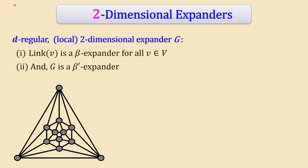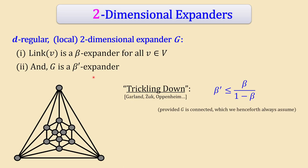A d-regular graph G is a local two-dimensional expander if it has two properties. Property one: for every vertex V, the link graph is a beta-expander. Property two: the whole graph G itself is also a good expander with some parameter beta'. There's a theorem called 'trickling down,' first proved by Jouk in the early 2000s, which says whenever property one holds with beta, you automatically get property two with beta' at most beta/(1 - beta), assuming G is connected.